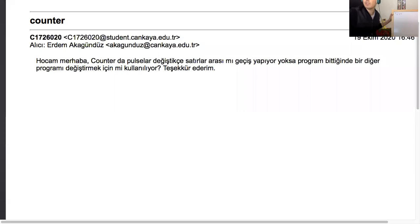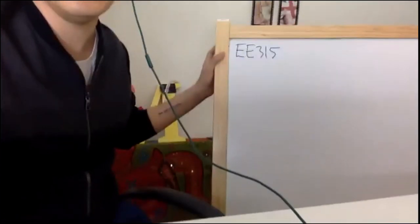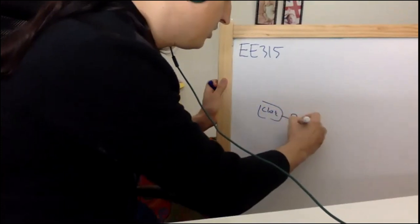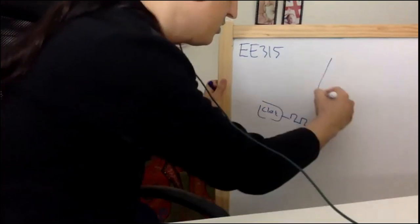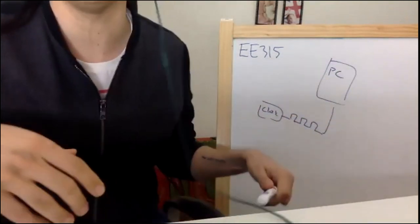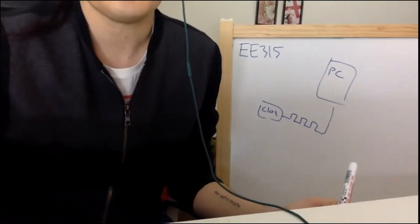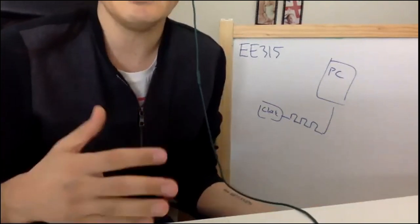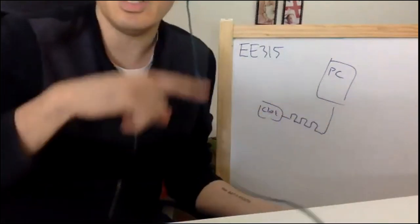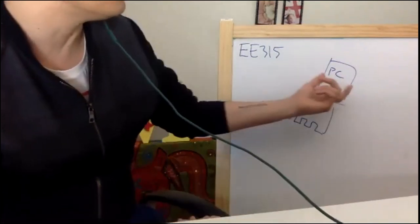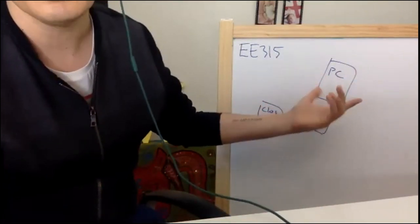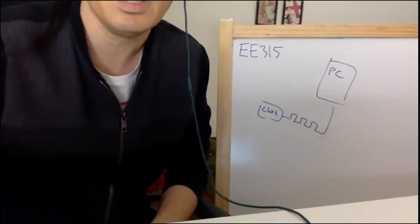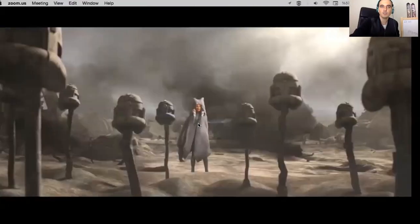The program counter works like this: there's a clock creating pulses, and it is connected to the program counter. The program counter is no different than a counter from your digital design course. As you feed a pulse, it increases its value — it's a register. It starts with zero, and as pulses arrive it becomes one, two, three.